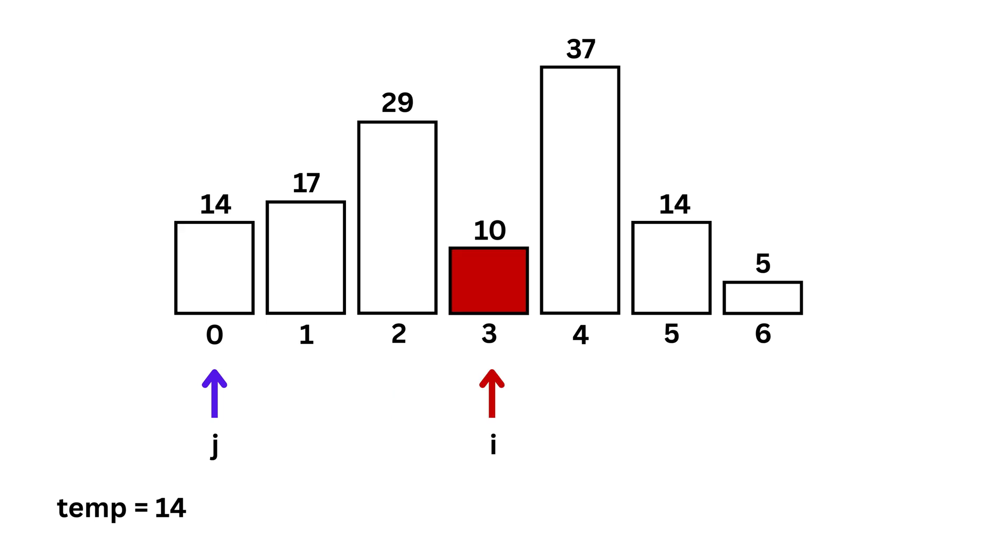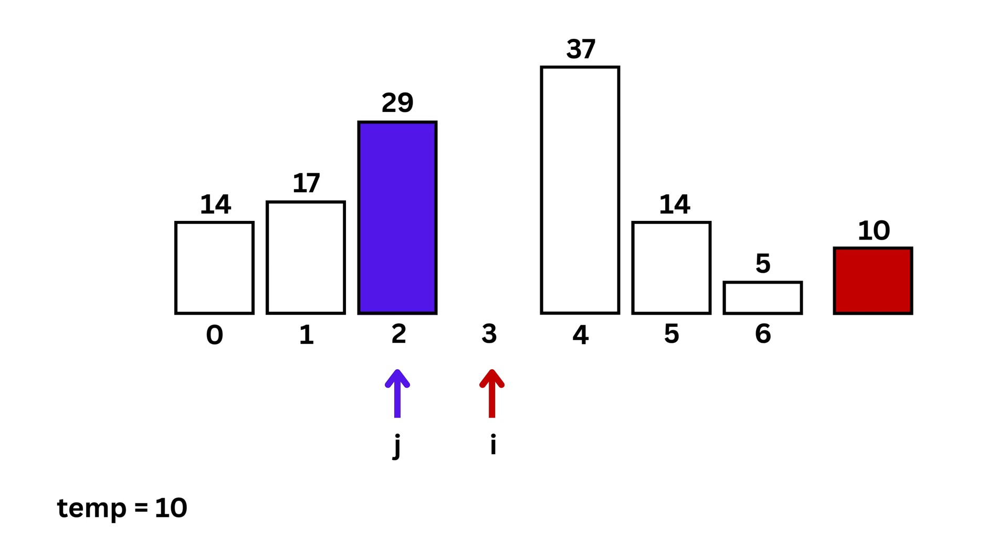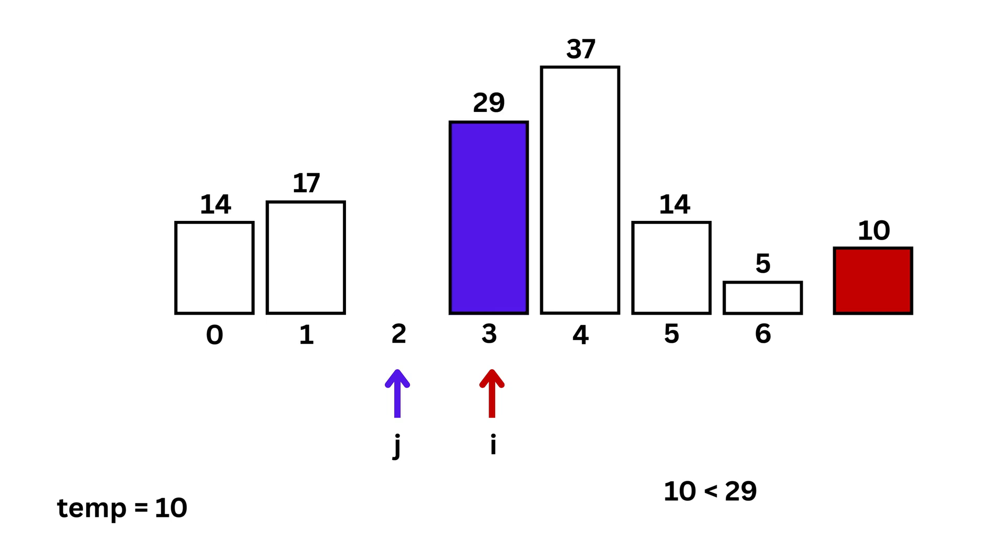Now, i moves to position 3, so temp is now 10. j starts from i minus 1, or j starts from 2, pointing to 29. Since 10 is smaller, we shift 29. Now, j is equal to 1, pointing to 17.